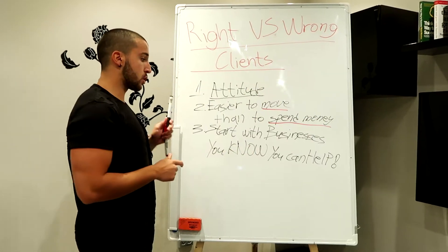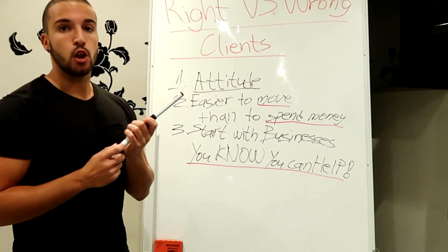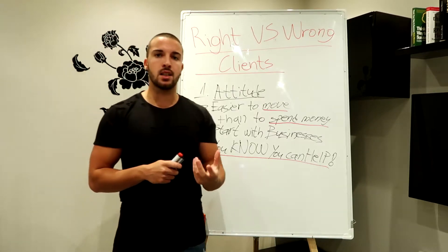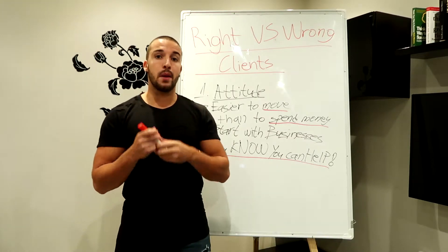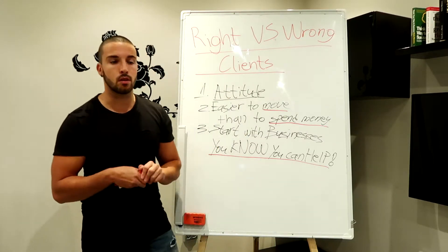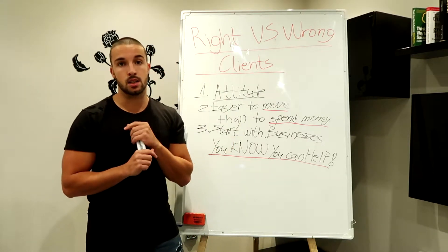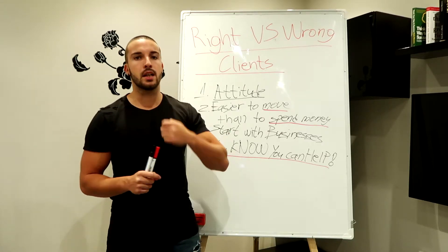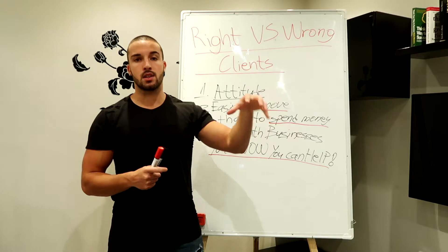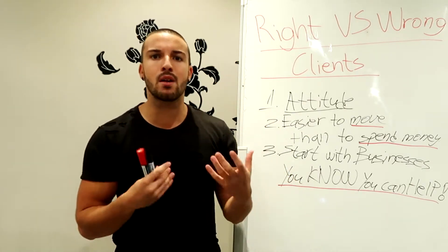Number three: start with businesses you know for a fact that you can help — 100%. That's the mistake I made in the past. When I started my agency about a year and a half ago, I picked the wrong niche — home security. I didn't know how to get them leads. I run a lead generation agency, so we get straight to the point and give a price for a certain amount of leads. Because of my ability to sell well, I closed two clients in the first month but didn't know how to deliver results.